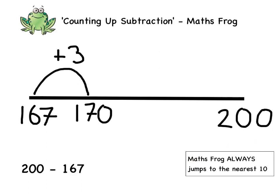After that, the next 10 is 190, and after that the next 10 is 200. So we can do one big jump of 30 and mark that onto our number line.